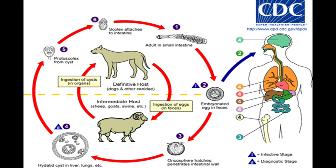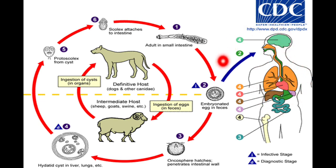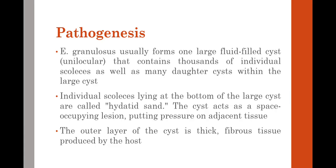When the oncosphere larvae reach the lungs or liver of a human being, they develop into a hydatid cyst. However, because the human's lungs and liver are not available as food for the dog, the life cycle cannot continue further. Therefore, the human being is a dead-end intermediate host — the cycle does not continue from humans the way it does from sheep. Hence, human beings are the dead-end intermediate host for Echinococcus granulosis.